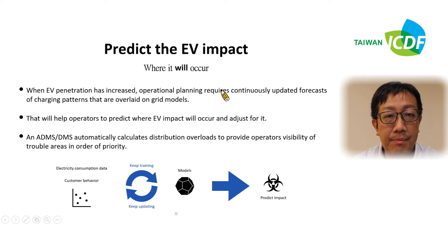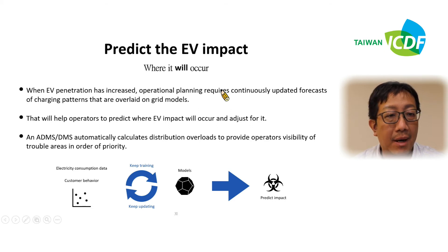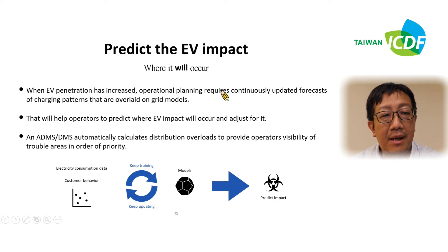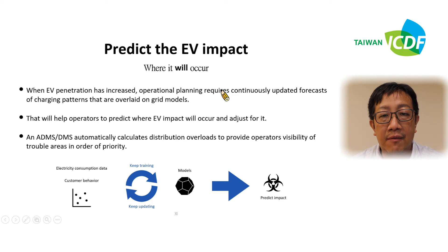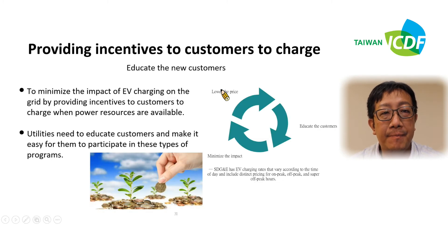How can we predict the EV impacts? When EV penetration has increased, operational planning requires continuously updated forecasts and charging patterns that are overlaid on grid models. That will help operators to predict where EV impacts will occur and adjust for it. ADMS or DMS automatically calculates distribution overloads to provide operators visibility of the affected area in order of priority.